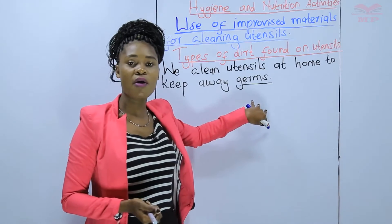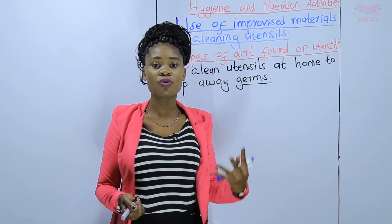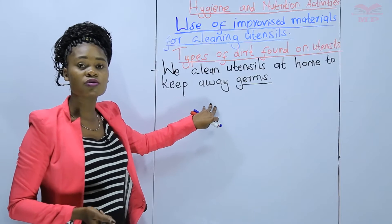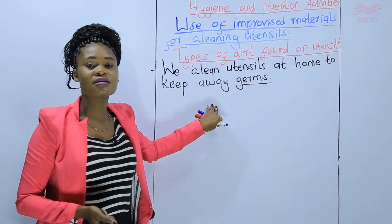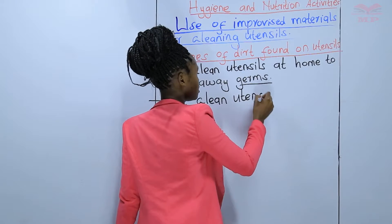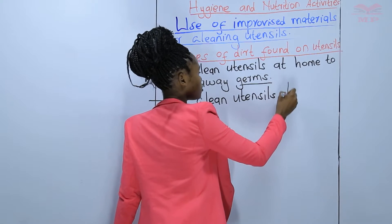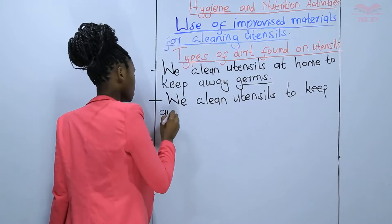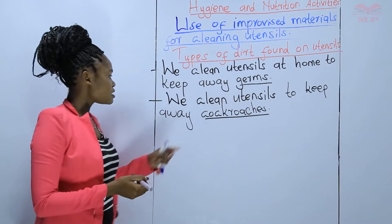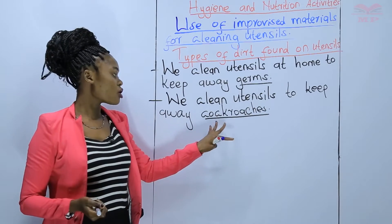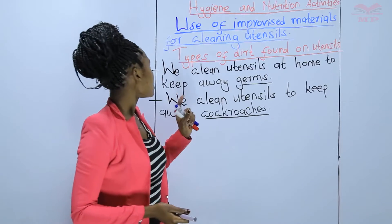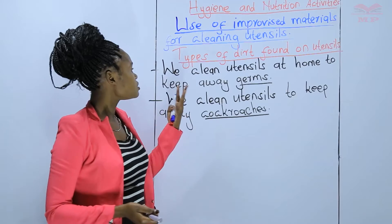Germs are not good for our health. When you serve your food from a dirty plate, you can become sick. We also clean utensils at home to keep away pests such as cockroaches. Dirty utensils attract cockroaches, and that is the reason why we clean utensils at home.